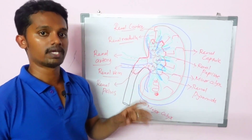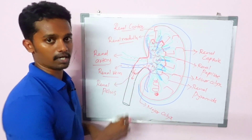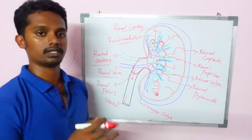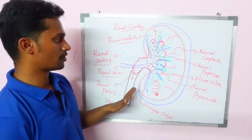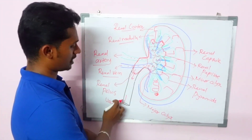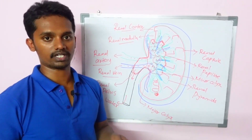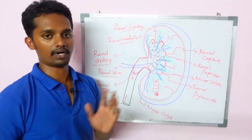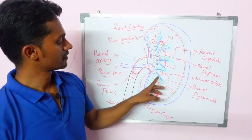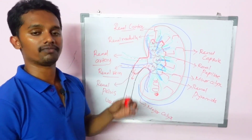Urine is finally collected in the renal pelvis, and from there it goes to the ureter. The ureter is a small tube that takes urine from the kidney. At the end, there is the urinary bladder, which is the storage tank of the urine. Let's summarize: cortex, medulla, pyramid, then renal papilla, minor calyx, major calyx, then renal pelvis, and finally the ureter.